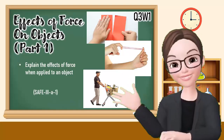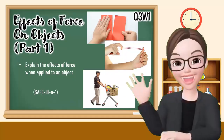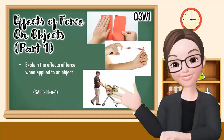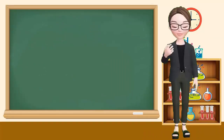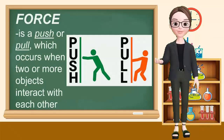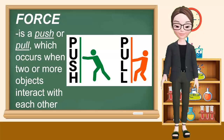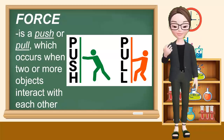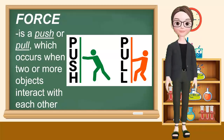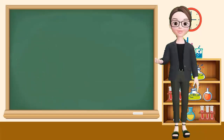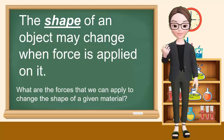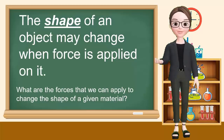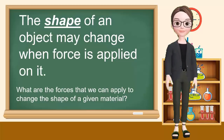We will explain the effects of force when applied to an object. Force is a push or pull which occurs when two or more objects interact with each other. The shape of an object may change when force is applied on it.